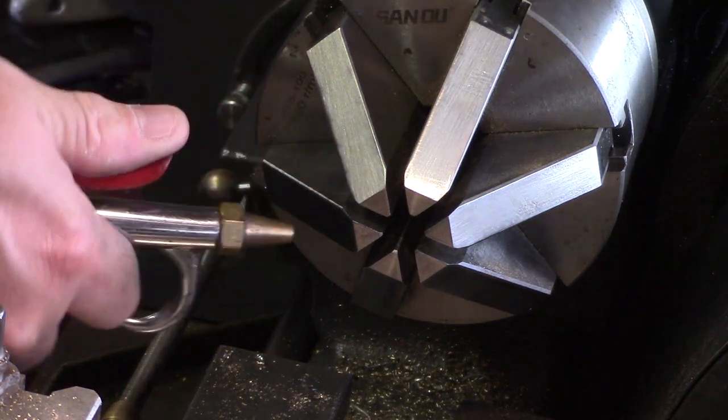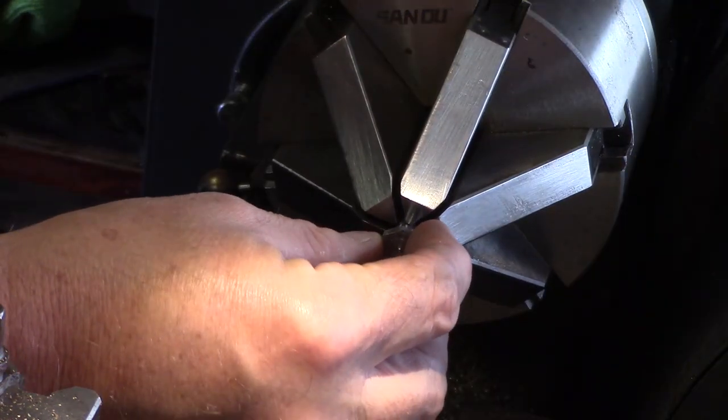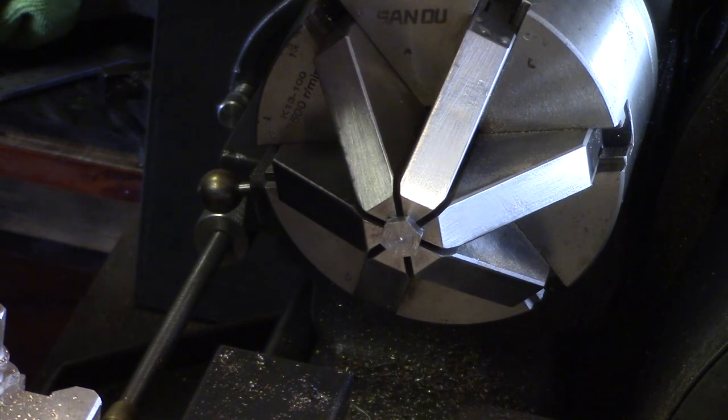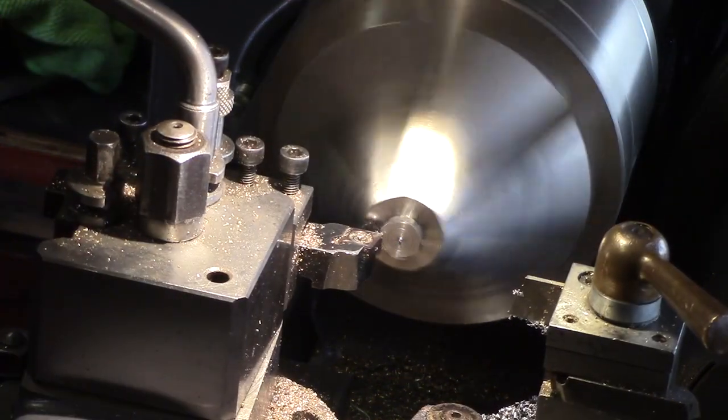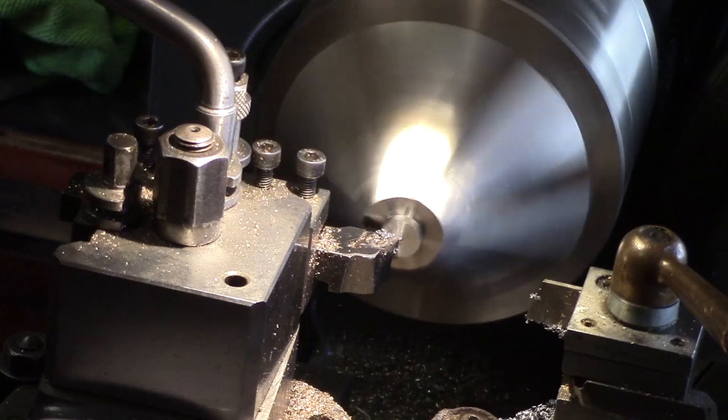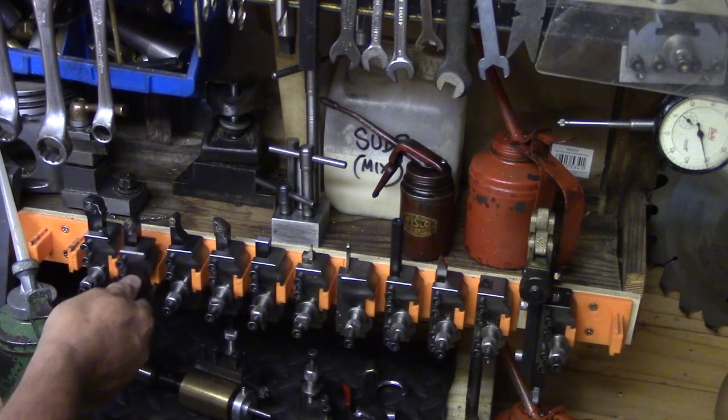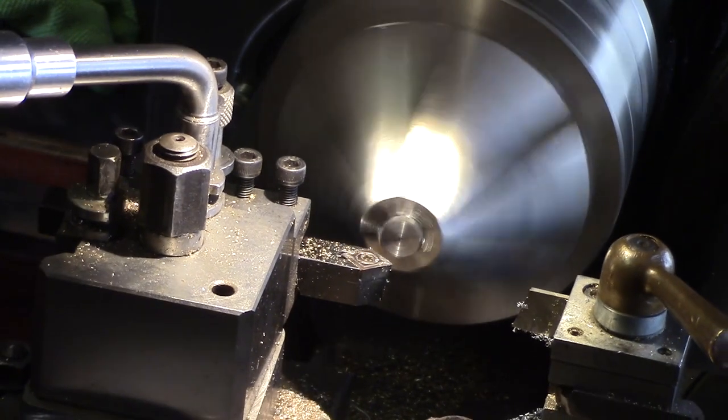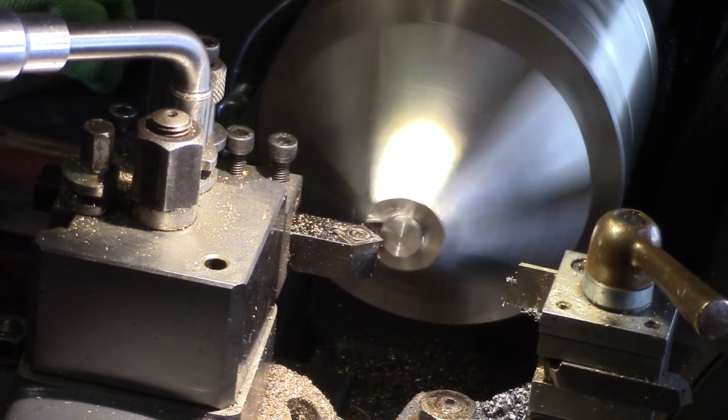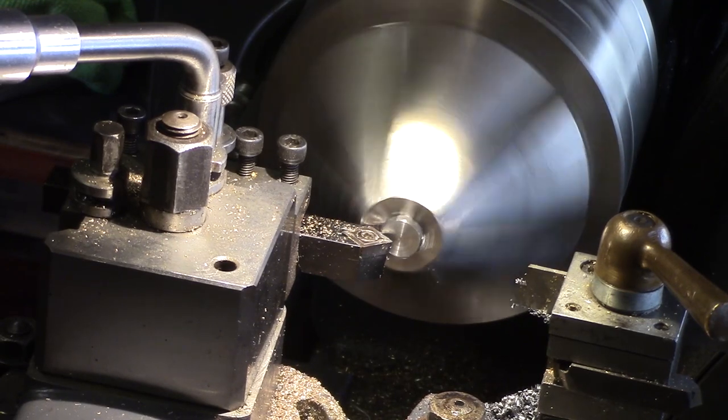Once completed, the pin was parted from the stock and then turned around in the chuck so that the face could be cleaned up and a chamfer put on the head of the bolt for appearance. It was a tight squeeze to fit the tool in so close to the chuck, but the chamfer turned out nicely.